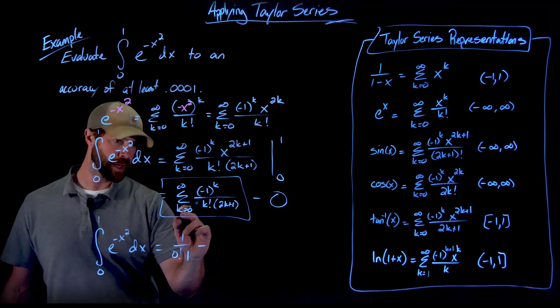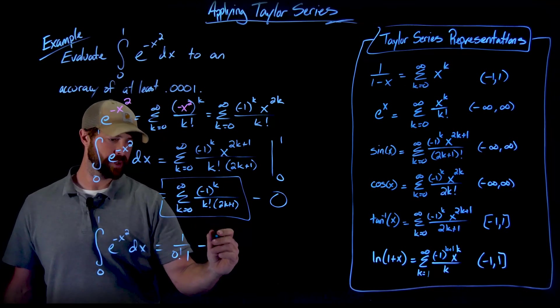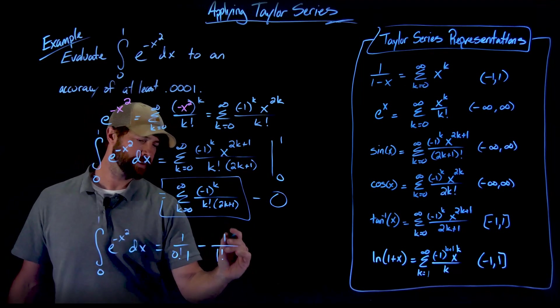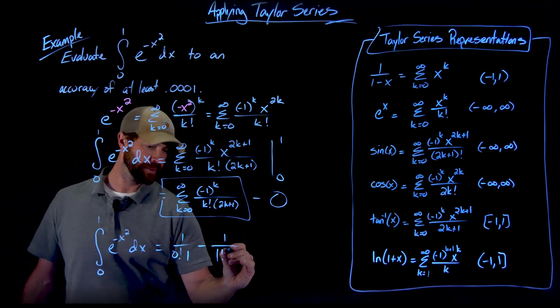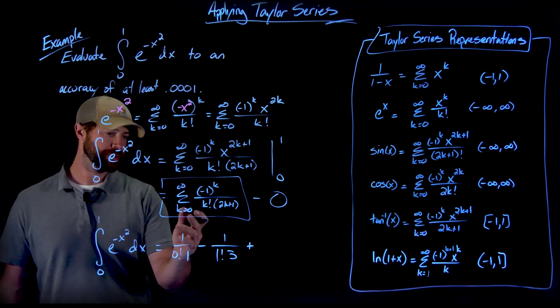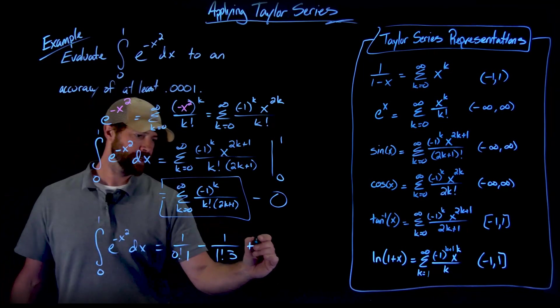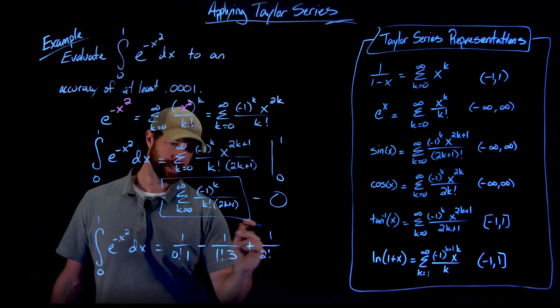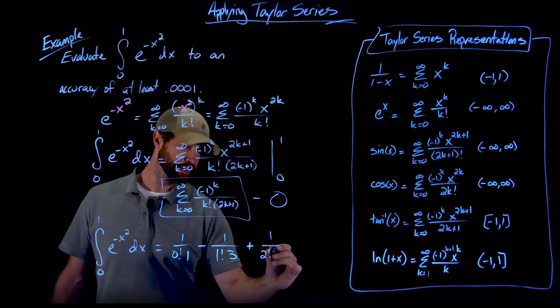When k is 1, that will be a negative 1. So I'll have this negative 1 here. And the denominator, that's 1 factorial. And then this will end up being 3. And then the next term will be when k is equal to 2. This will be positive, always a 1 on top. And then I have 2 factorial times 2 times 2 plus 1, which is 5.